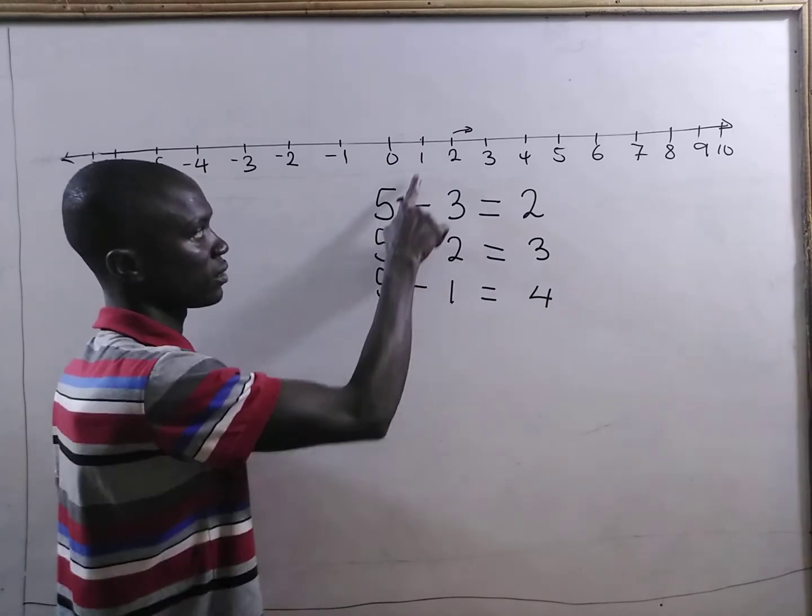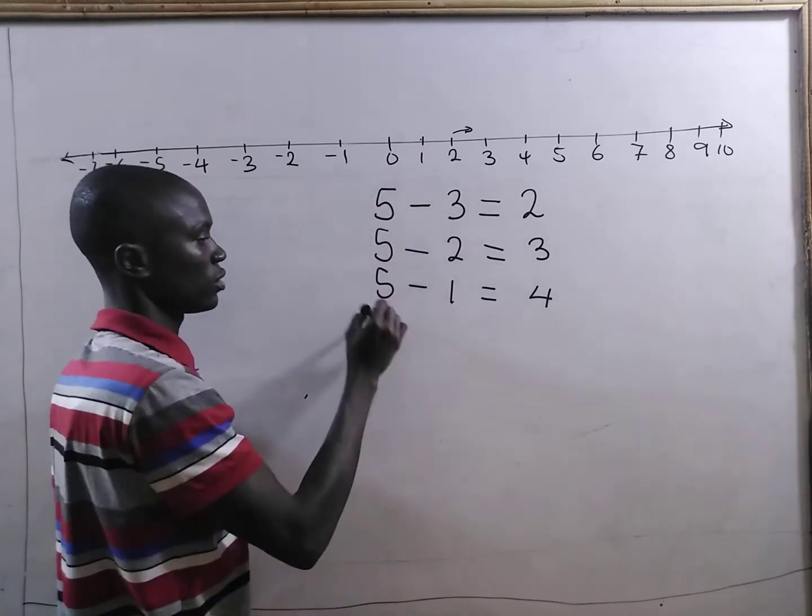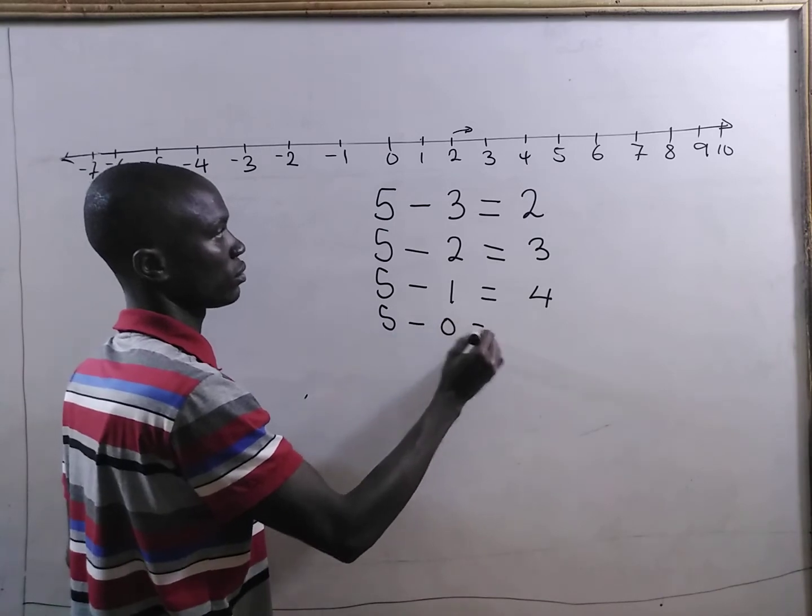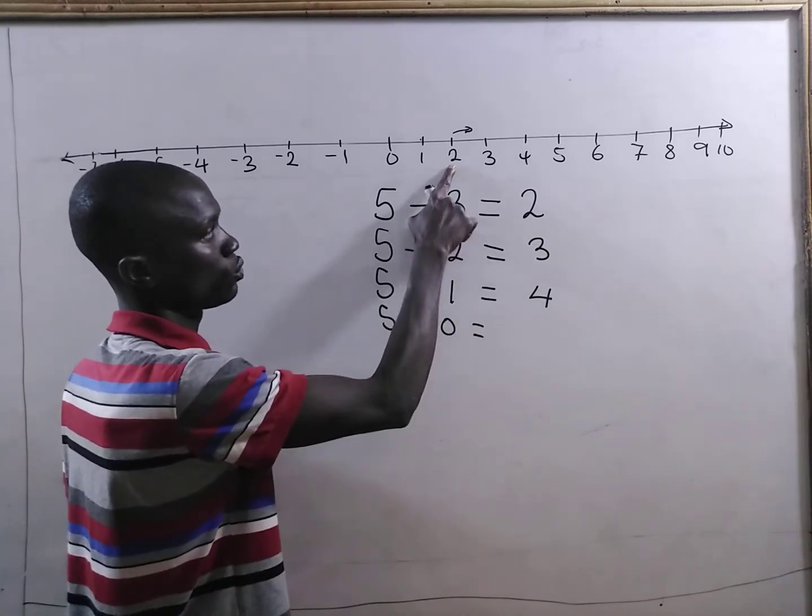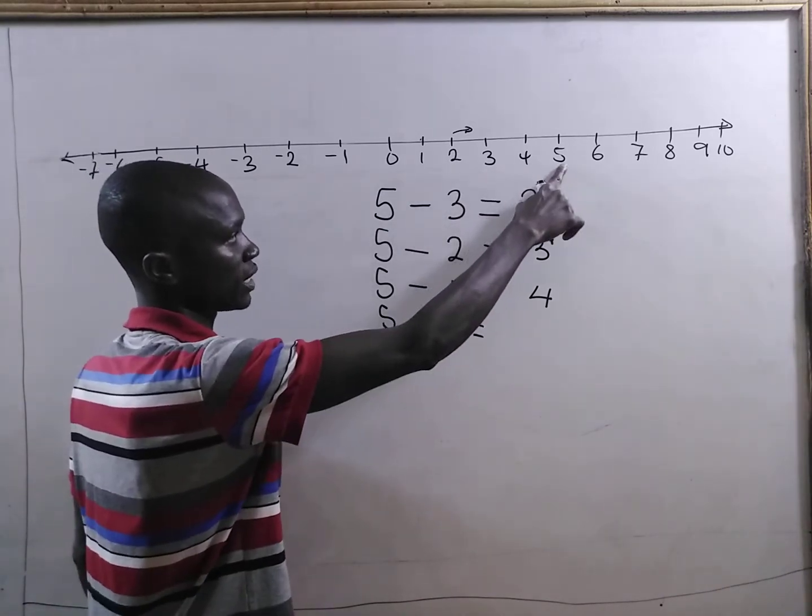Here from positive 1, we see that we are going to 0. So, 5 minus 0. We have 2, 3, 4. Then, it means that we are going to 5.